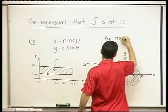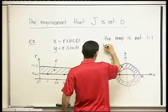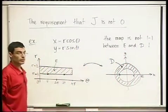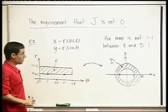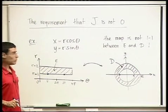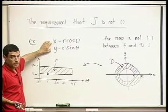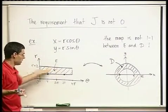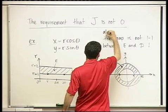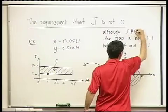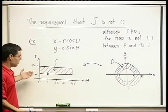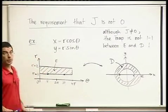The map is not 1-to-1 between E and D — even for this good old map of just converting to polar coordinates. What's the Jacobian for this transformation? It's r — we calculated it, it was r. Is it ever zero in this domain? It's never zero. So: although J is not zero, the map is not 1-to-1 between E and D. The requirement that J be not zero does not suffice in order to guarantee that the map is 1-to-1.